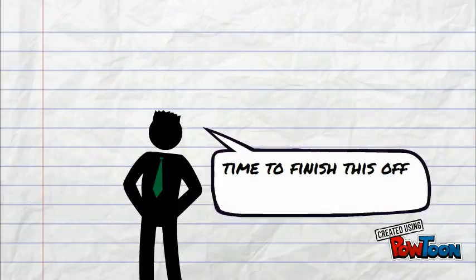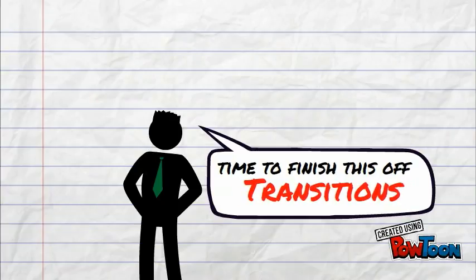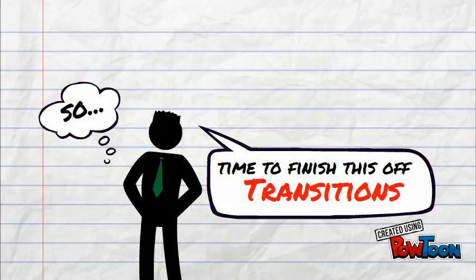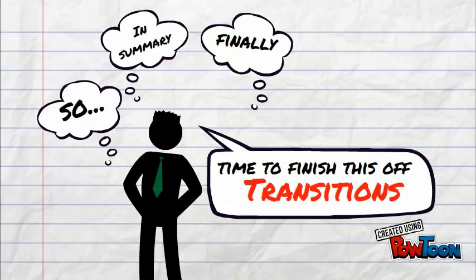The first part of a conclusion is the transition. This is the easiest part. You simply tell the reader that this is the last paragraph. You could do this by saying things like: so, or in summary, or finally.